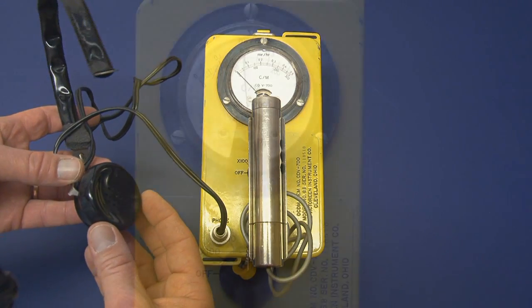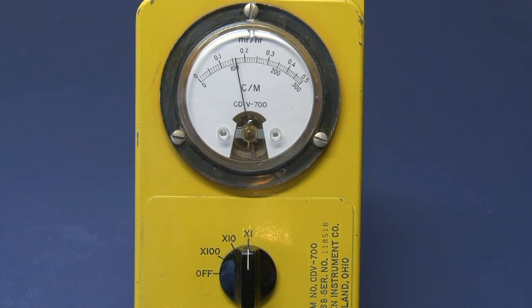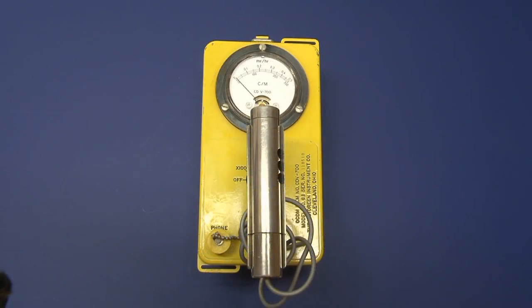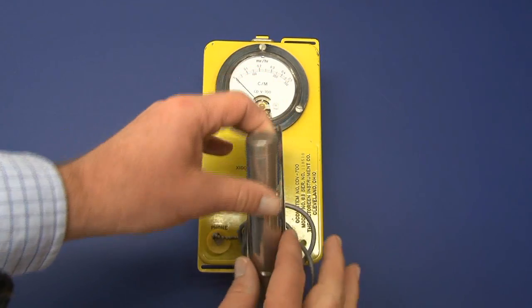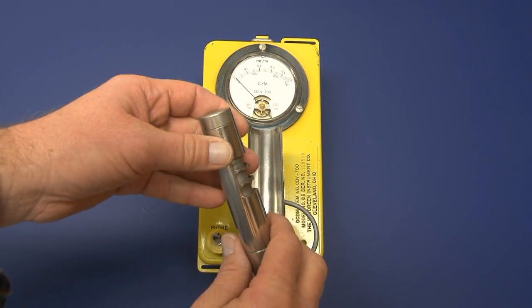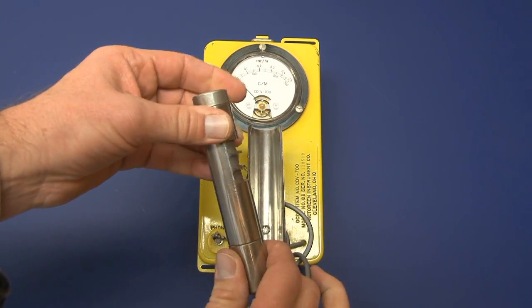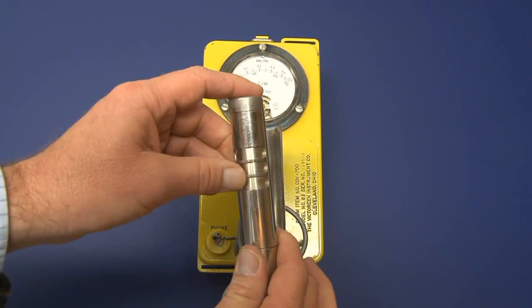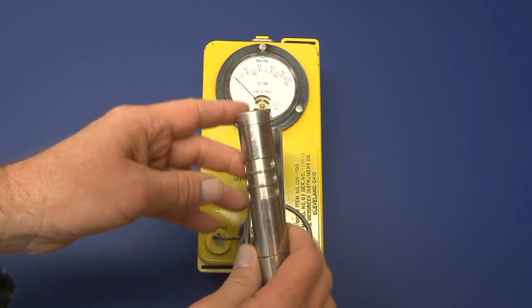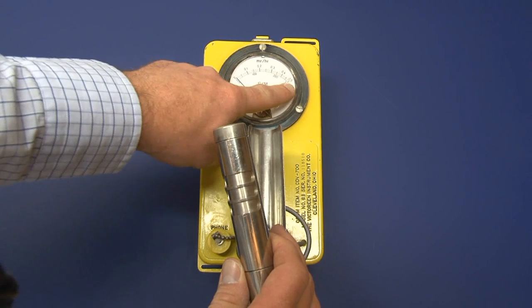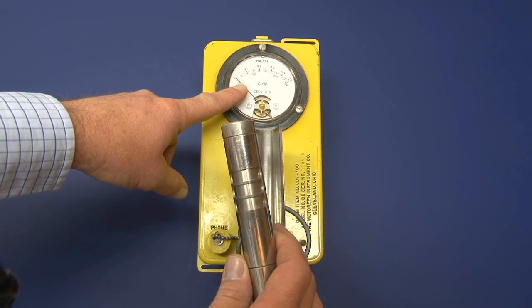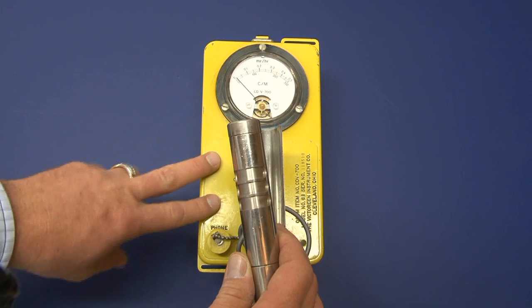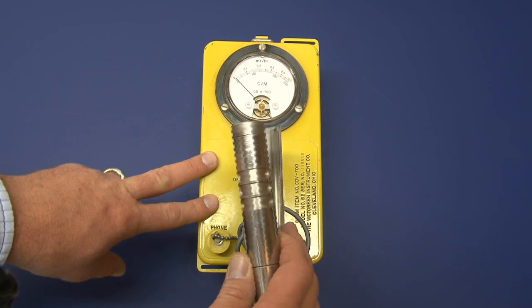I do want to point out one limitation on this instrument. It can happen in radiation levels above one R per hour, that would be a thousand MR per hour. What can happen is the instrument's GM tube can saturate or jam, and then the needle would peg out and then fall back down to zero or near zero, leading the user of the instrument to believe that they're in a safe area when in fact they may not be.